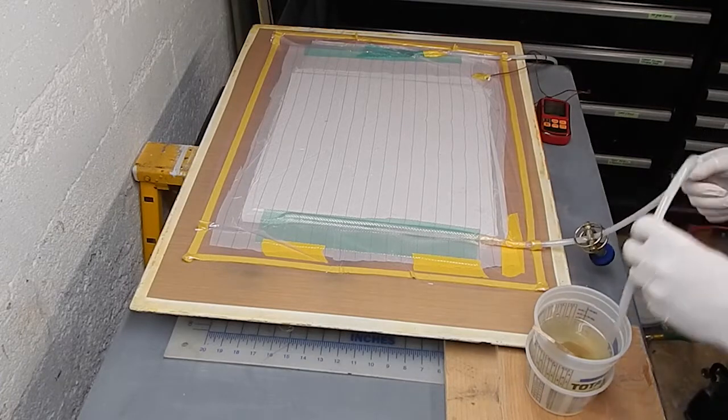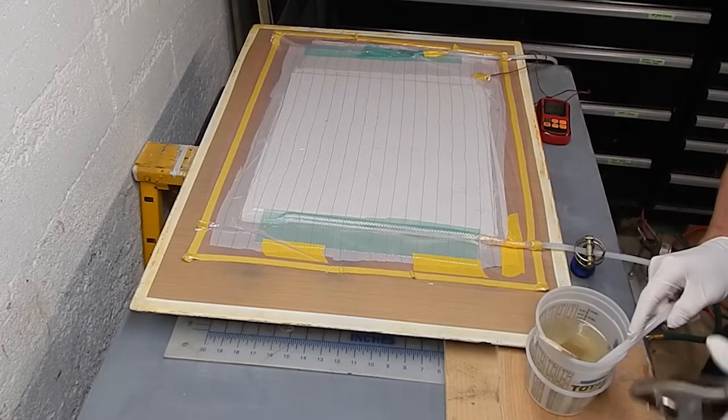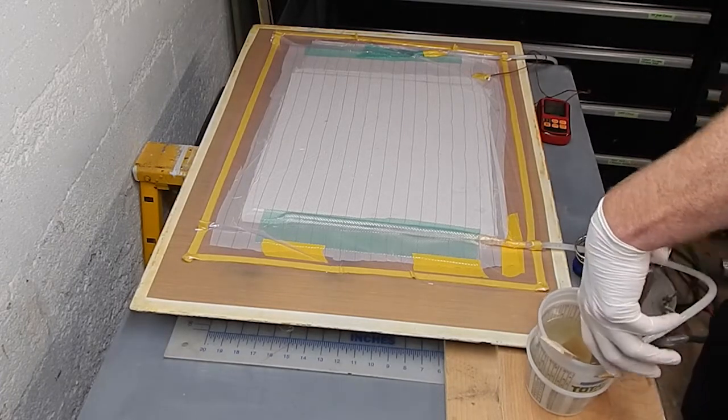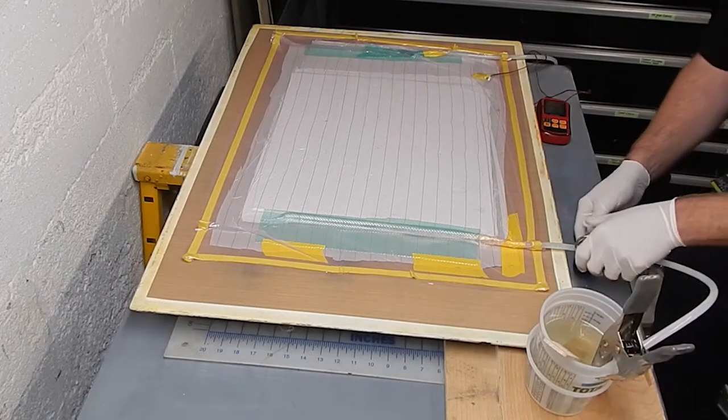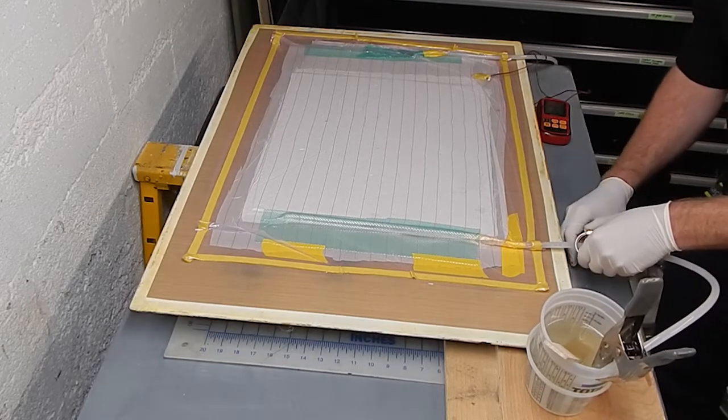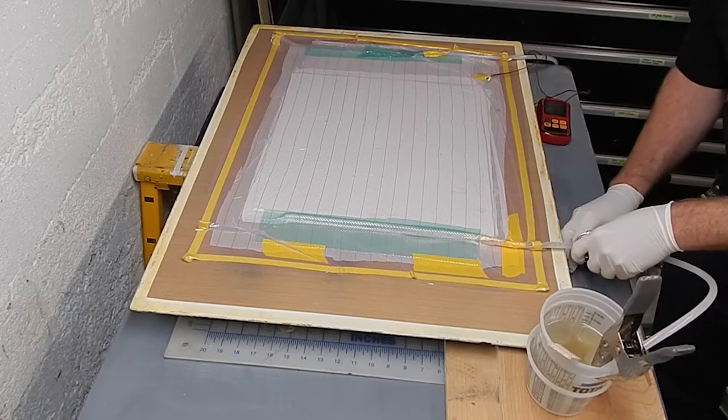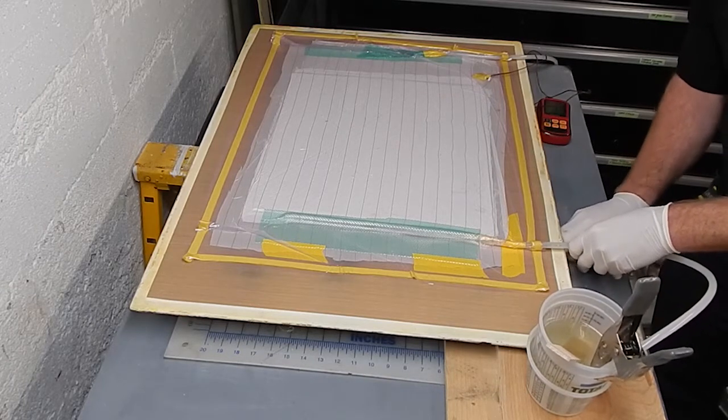This little cup screwed to the sheet of plywood there will be my support. Just put a fender washer in the bottom and screw it there and it holds it nicely so the cup doesn't tip over. Having your cup tip over sucks.